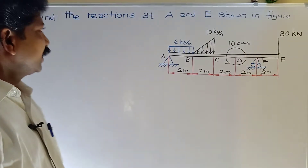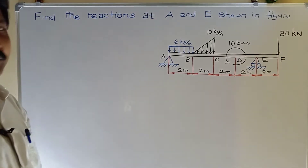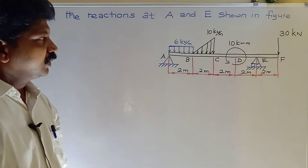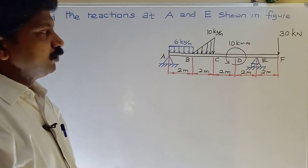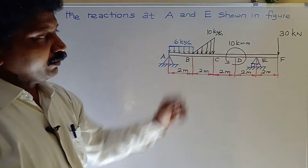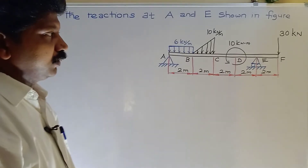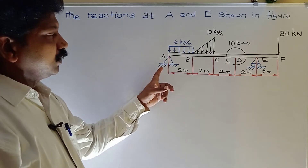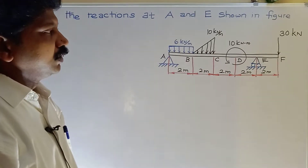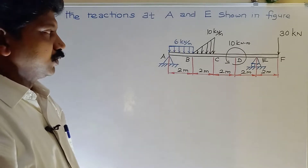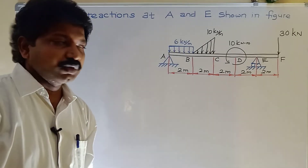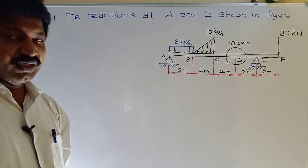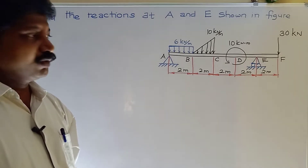Dear students, welcome. We are going to solve one more problem in supports and reactions. In this problem, one uniformly distributed load, one uniformly varying load, a couple, and one point load are available. One end is a hinge support and the other is a roller support at point E. First, as usual, we draw the free body diagram and then apply the equilibrium conditions: Sigma H = 0, Sigma V = 0, and Sigma MA = 0.